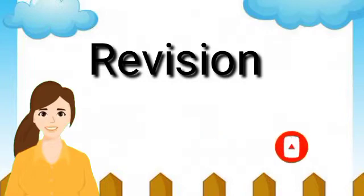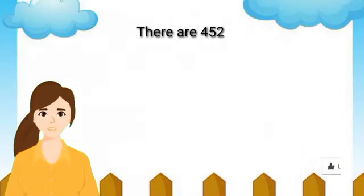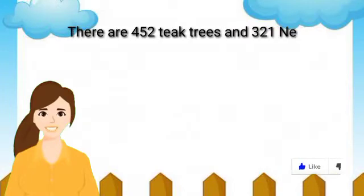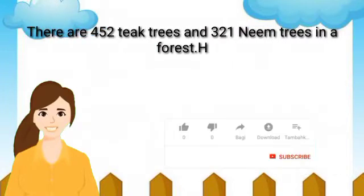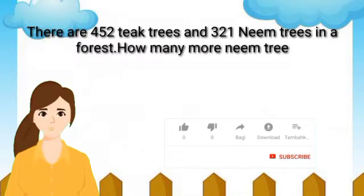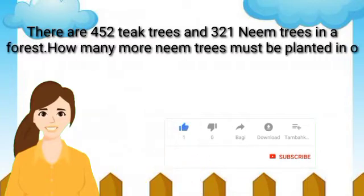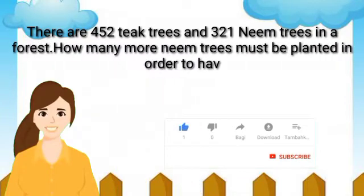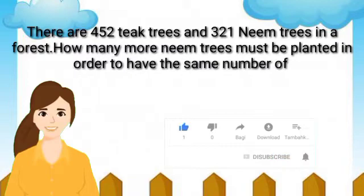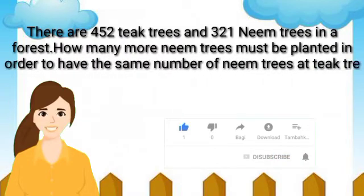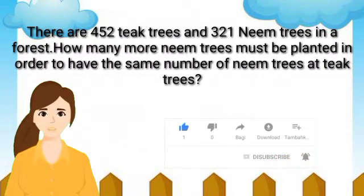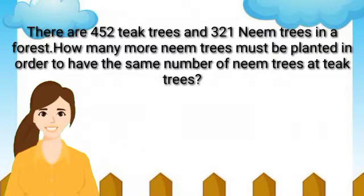Let's solve some examples. First example of subtraction: there are 452 teak trees and 321 neem trees in a forest. How many more neem trees must be planted in order to have the same number of neem trees as teak trees?